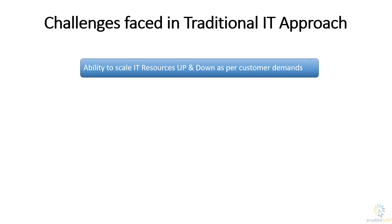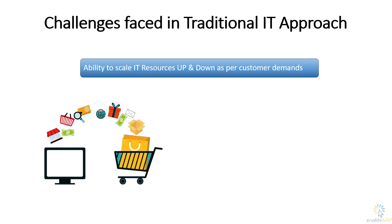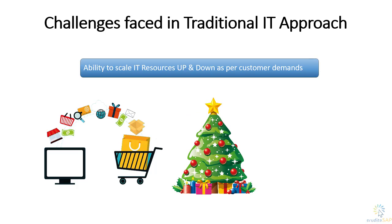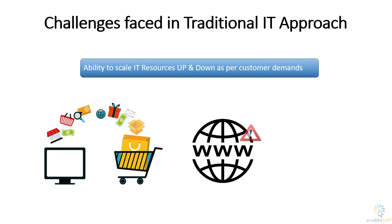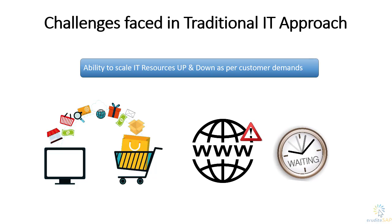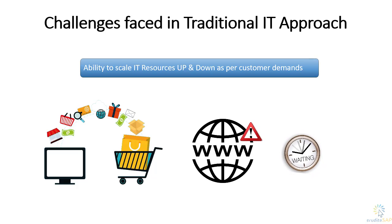Another example: suppose a company is running an e-commerce website on its on-premise system. Near Christmas, the load on the servers increases and the website gets slow due to huge traffic. The company wants to handle the load properly and not keep customers waiting. The company decides to increase its hardware power for this Christmas period, but again, it cannot do so due to the challenges of an on-premise system.